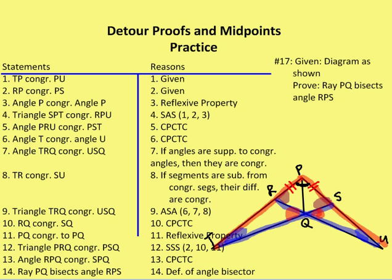Now I'm going to say that angle TRQ is congruent to angle USQ, because if angles are supplementary to congruent angles, those two angles are congruent to each other. Then TR is congruent to SU — I know that because RP and PS are congruent and TP and PU are congruent, so subtracting RP from TP and SP from UP gives TR and US. Their differences are congruent because subtracting congruent segments from congruent segments yields congruent differences.